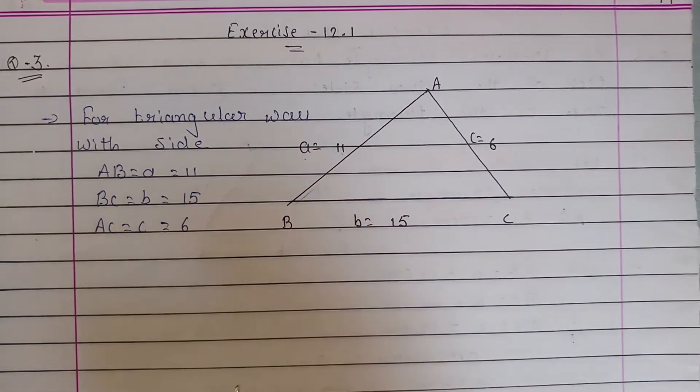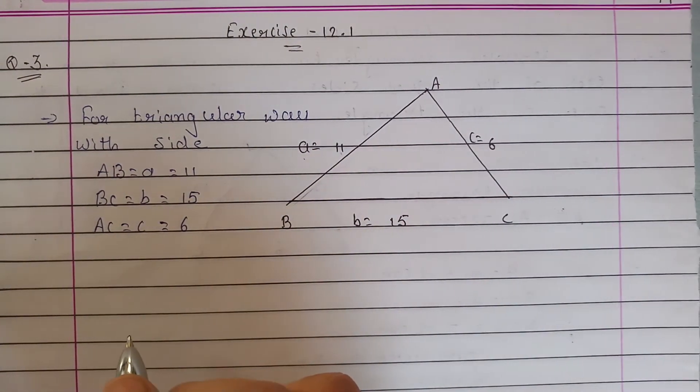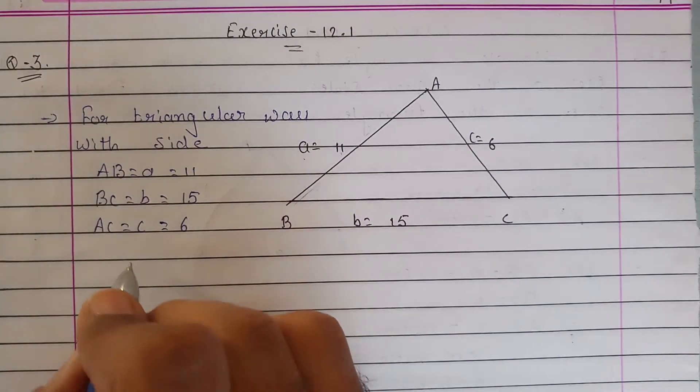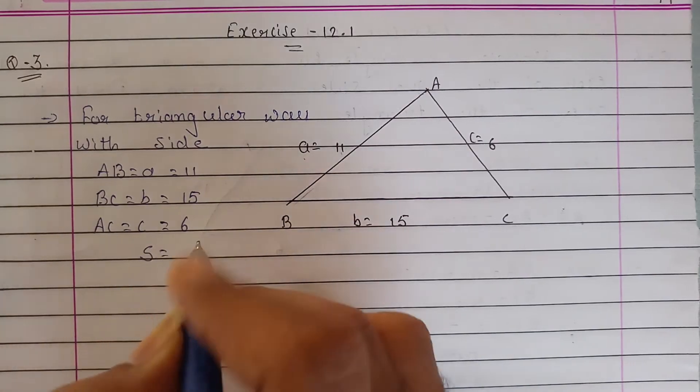And AC = c, which is given as 6. We have to find its area. To find the area, we will use Heron's formula, but for that we need s. The formula for s is: